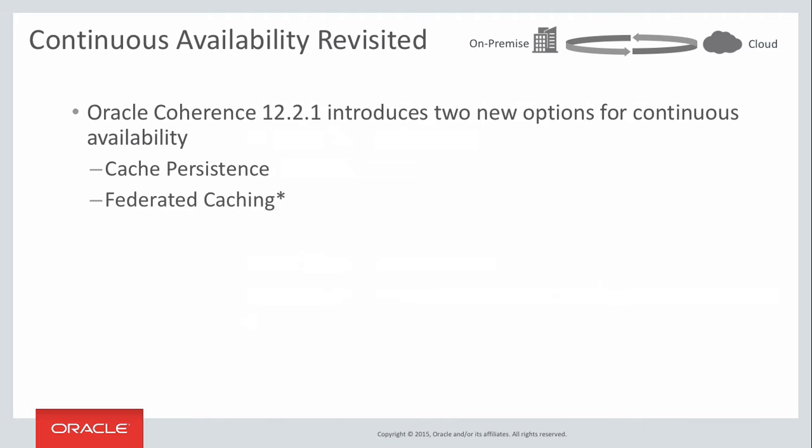These two new options are cache persistence — the ability to support real-time active disk-based recovery and snapshotting — and the topic of today's talk, federated caching, which supports inter data center asynchronous replication. While these features existed in some form prior to this release, for Coherence 12.2.1 they've been completely redesigned and re-implemented from the ground up, built into the core technology right down to the network and clustering protocols, making them work simply and with minimal overhead. Our new designs are based on years of experience, thousands of production deployments, and field knowledge, pioneering in areas like configuration and operational simplicity.